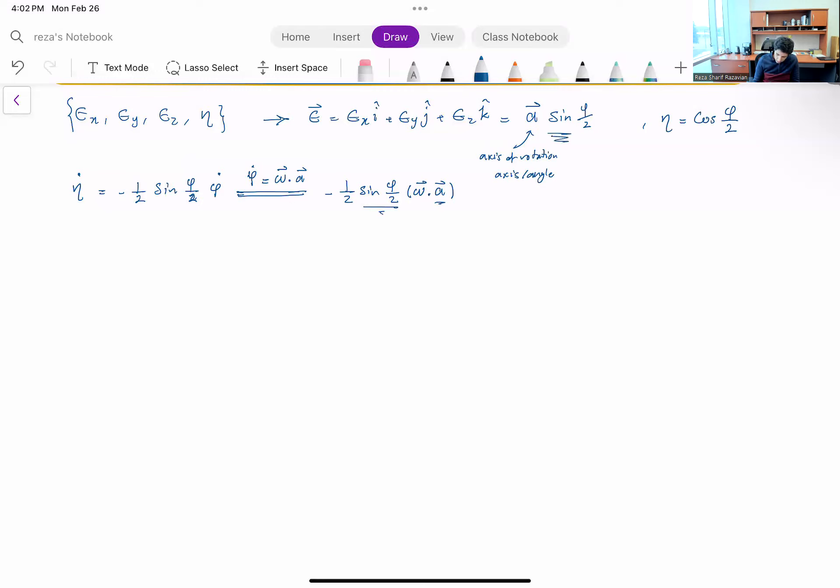And I can kind of bring this sine of phi over two next to a, so a times sine of phi over two is actually my vector epsilon. So what I have, this one, I'll write it here, equals minus one half omega dot epsilon. Very nice. So if I know my omega, that is the rate of change of eta.